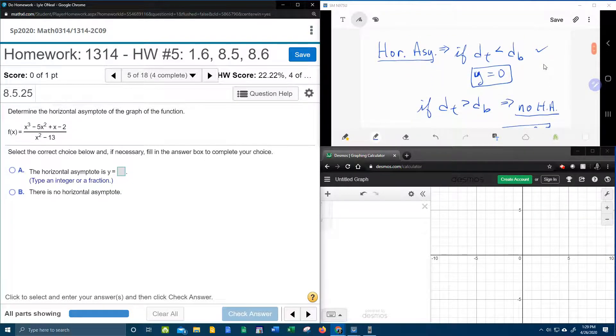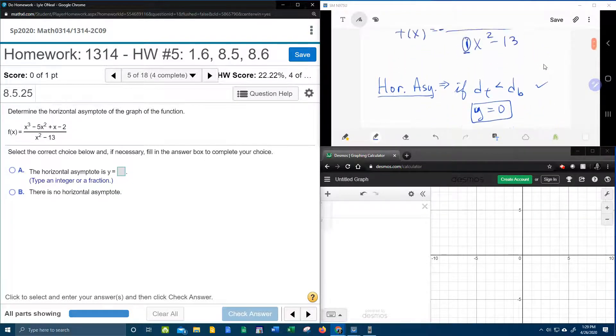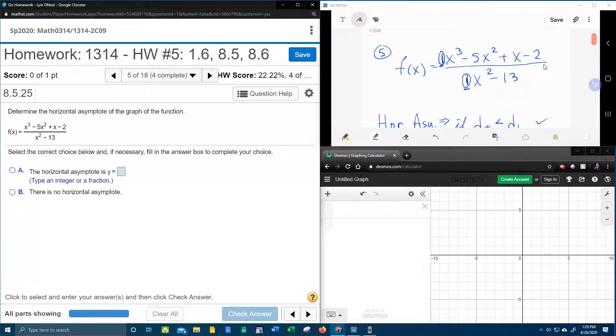All right, so let's look at which scenario do we have. The degree of the top is 3. This is the degree of the top. The degree of the bottom is 2. The degree is the biggest power on any variable. So in our case,